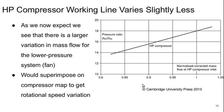We can then go into the core and look at the high pressure compressor. The working line there varies slightly less — about 18% variation in mass flow. This is exactly what we expect: there is a larger variation in inlet corrected mass flow for the low pressure system than for the high pressure system. Again, we can superimpose this on the compressor map to get the rotational speed variation.